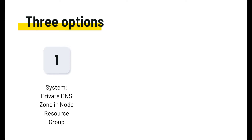A private AKS cluster is a Kubernetes cluster that has the API server listening on a private IP in your own controlled network - in your virtual network in Azure. We have to find a way to translate the name of the API server, which is given by Azure, to the API server via some form of DNS.